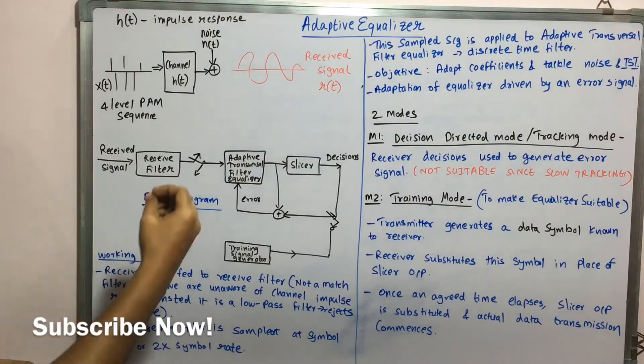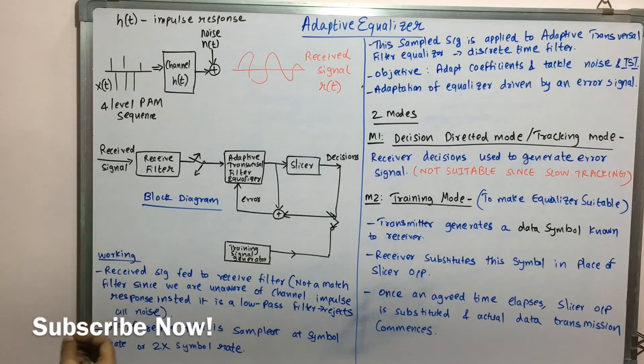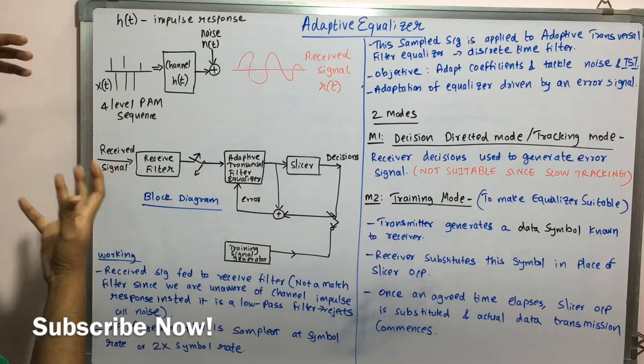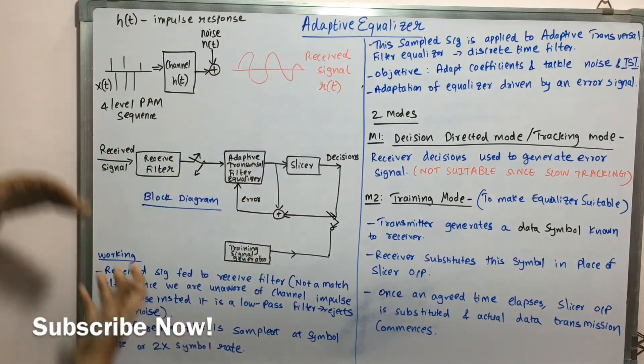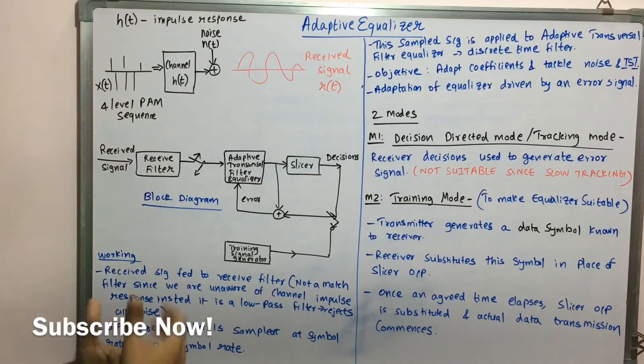But instead, since it is not aware of the channel impulse response, which is generated that is HT, it is a low pass filter that we use. Now this low pass filter just basically rejects or eliminates all of the noise which are contained in the received signal. So it's basically simple, you have a received signal which is distorted with noise, you input it to the received filter, it will eliminate all the outliers which are there and then it forwards on to the next step.